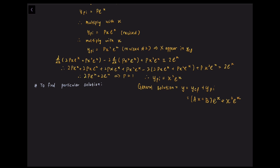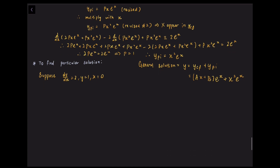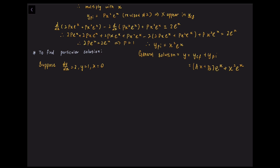This is the final step to solve for the particular solution. Note that there are two arbitrary constants in the general solution. If two pieces of information are supplied, which makes it possible to form two equations involving a and b, then the particular solution can be found. This information is often referred to as the boundary conditions or the initial conditions. Suppose it is given that dy/dx = 2 and y = 1 when x = 0. Then values for a and b can be found. We have the general solution y = (ax + b)·eˣ + x²·eˣ.